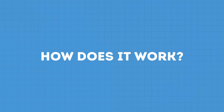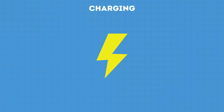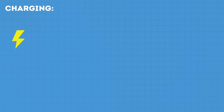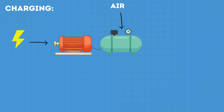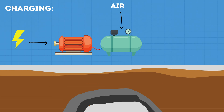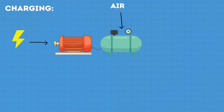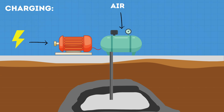When electricity is available — normally when there is a surplus and prices are low — we can use that electricity to drive an electric motor. The motor then drives a series of turbines which compress the air into either a large underground cavern or a purpose-built tank. For simplicity, I'll be explaining the systems that use caverns, but the process is essentially the same.